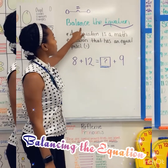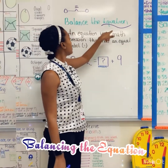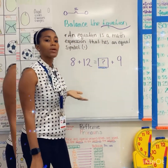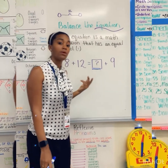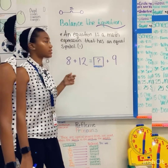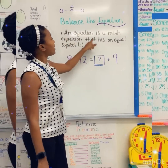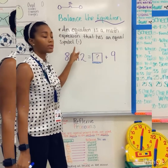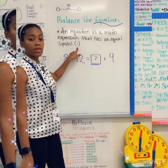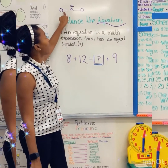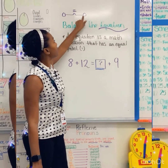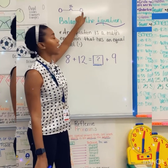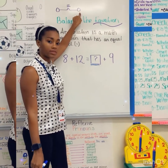Today we're going to be looking at balancing the equation. But before we can balance an equation, let's look at what an equation is. An equation is a math expression that has an equal symbol. This is the equal symbol. When we think of balancing something, whatever we have on one side, we need to be able to have it on the other side.